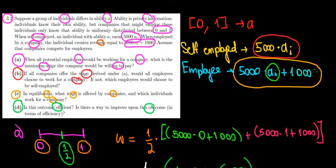The company is actually willing to pay a thousand euros extra. So under self-employment, they get 5000 times the worth of their value. Under the company case, they also get that plus a thousand euros.